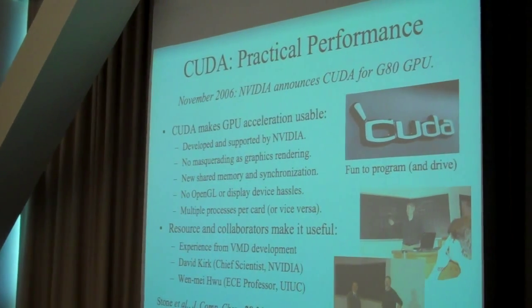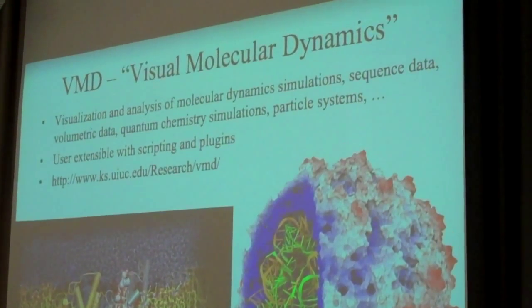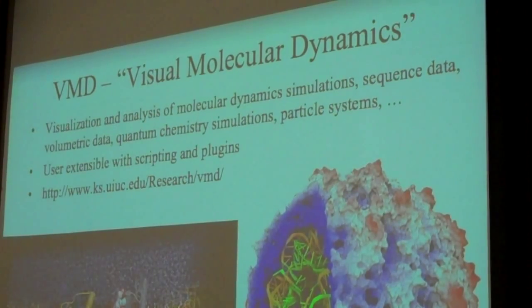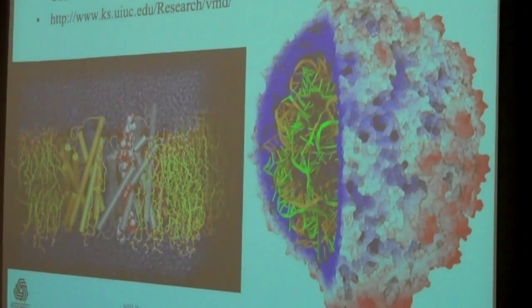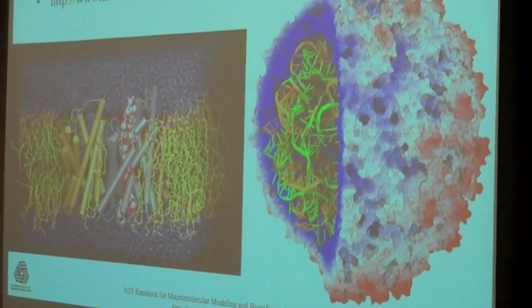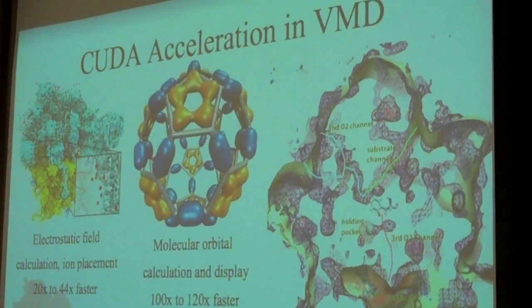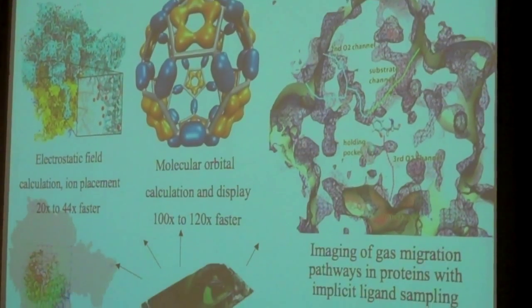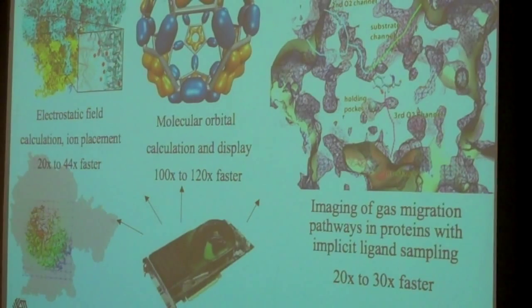VMD is even more popular than NAMD because it's used not only by NAMD users but also by users of NAMD's competitors, as well as people in completely different fields who still have to deal with atomic-level structures. VMD has a large number of CUDA-accelerated features. Someone noted they run continuum elastic calculations with linear elasticity models, and the best way to visualize long fibers is to write them as C-alpha atoms to use all of VMD's ability — VMD gets used in creative ways.